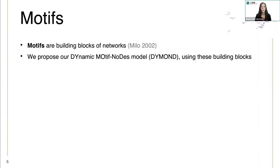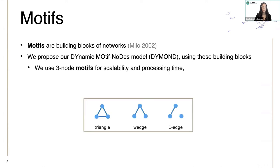We want a model that can generate synthetic dynamic networks similar to an observed network in graph structure and node behavior. And so we propose our model, dynamic motif nodes model, using these building blocks. We use three node motifs for scalability and processing time, and we define motif node rules for each motif configuration.